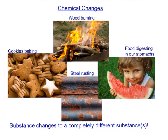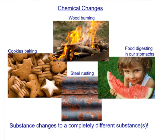Here are some examples of chemical changes. We have wood burning — we start with wood and end up with ash, a very different substance. Steel rusting: the initial steel is very different from rusty steel — it is not the same substance. Cookies baking: if you take a bite of cookie dough before and after baking, there is definitely a chemical change. Food digesting in our stomachs: when watermelon goes into our stomach, enzymes carry on a chemical reaction and break it down so it is no longer the same as when it went into our mouth. These are all examples of chemical changes.